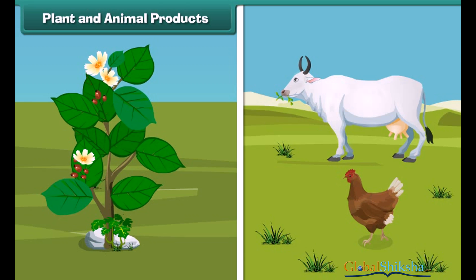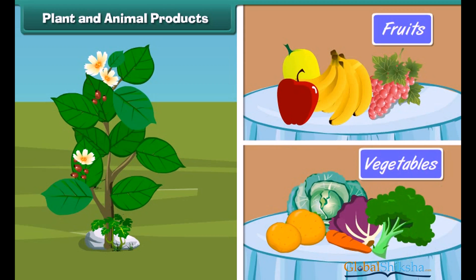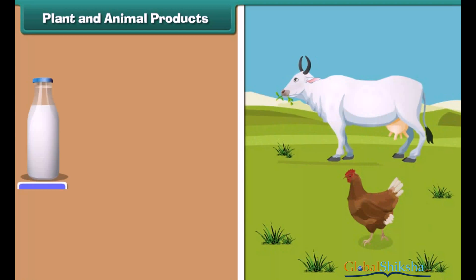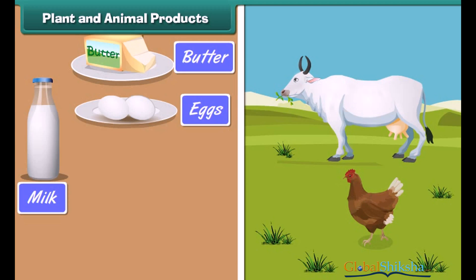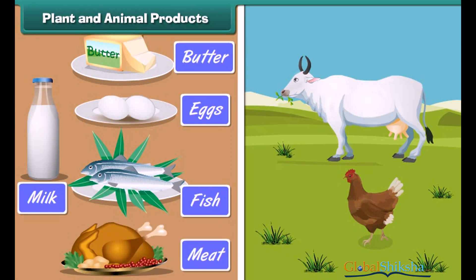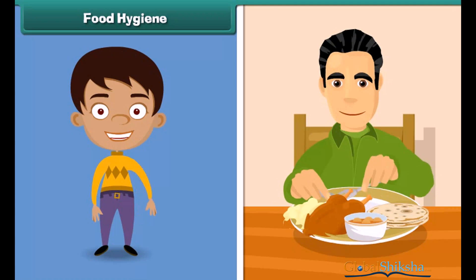We get our food from plants and animals. Fruits and vegetables are obtained from plants — they are called plant products. Milk, butter, eggs, fish, chicken, mutton, etc. are obtained from animals — they are called animal products.